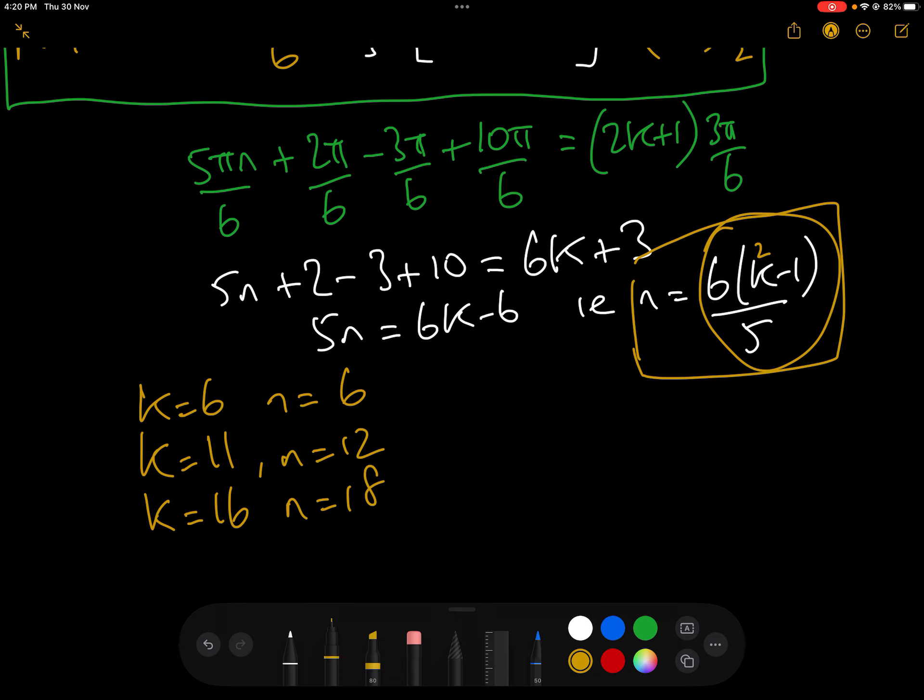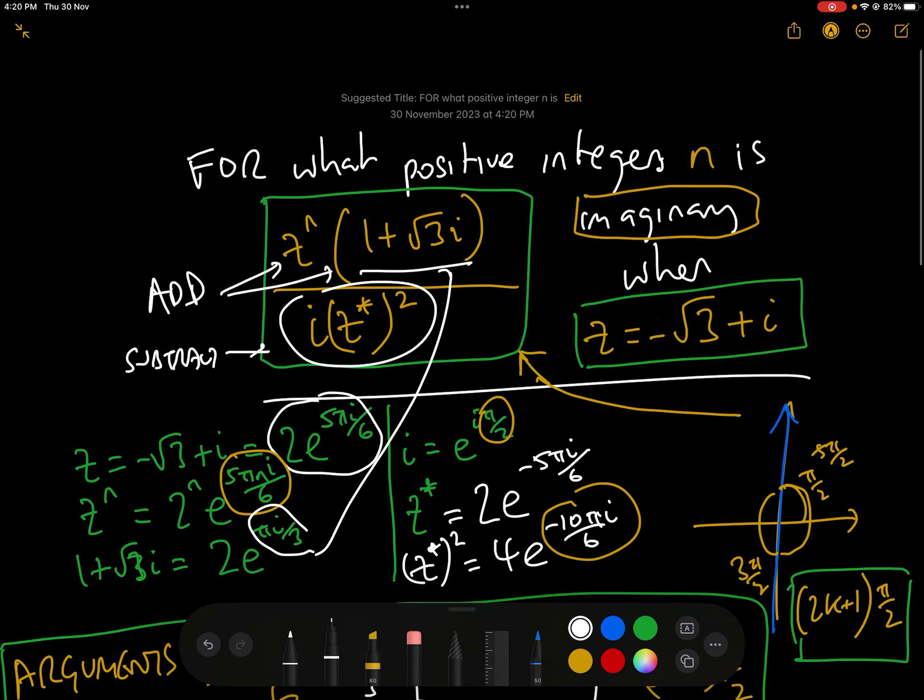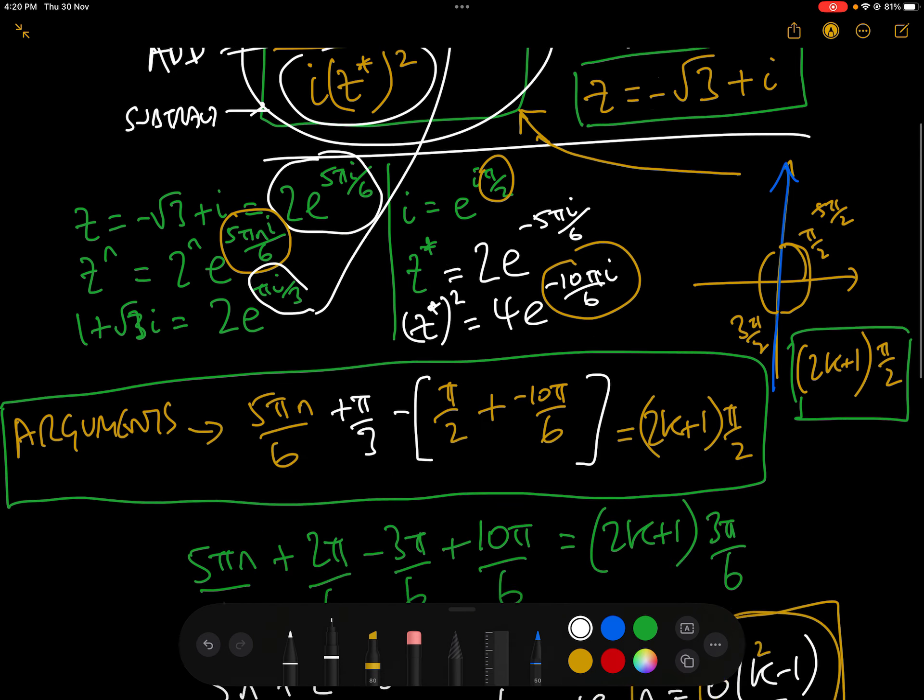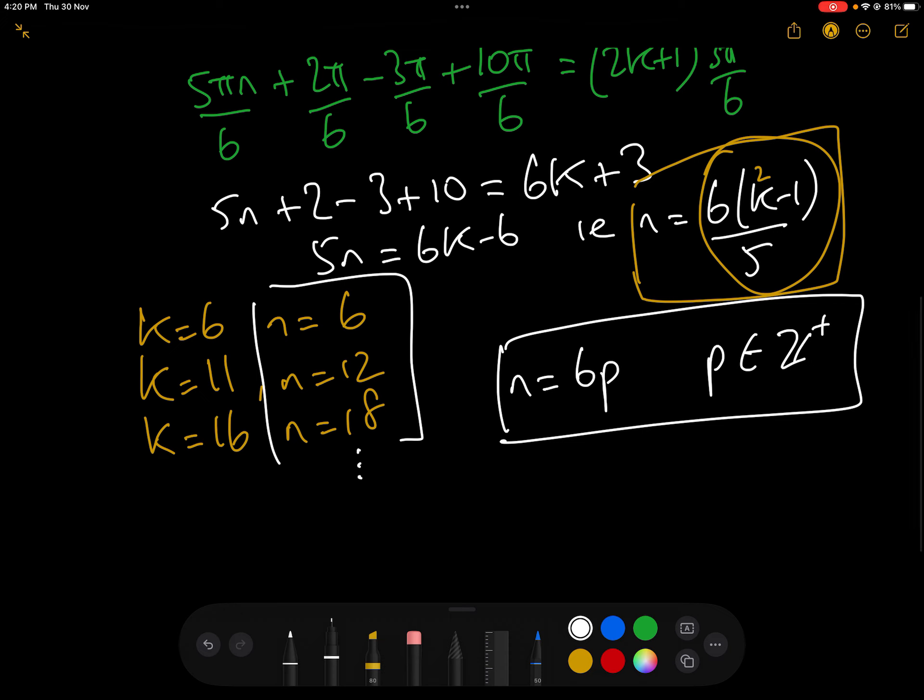So basically our values of n are 6, 12, 18. And in actual fact, it carries on ad infinitum, where n equals 6p, p contained in the positive integers. That is our answer to for what positive integers n is that expression imaginary. It is imaginary when n equals 6p, p contained in the positive integers, i.e. n equals 6, 12, 18, 24, etc.